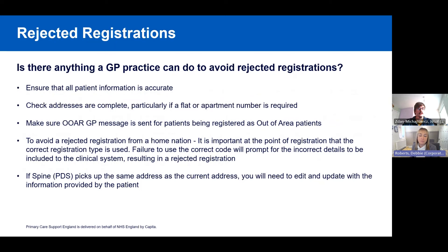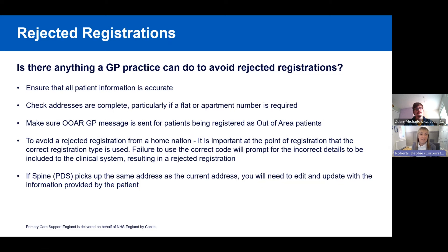To avoid a rejected registration, the most important thing is ensuring that all patient information is accurate and correct. Check addresses are complete, particularly flat numbers or apartment numbers. Make sure out-of-area registrations are sent with the correct free text. For home nation registrations, ensure the correct registration type is used at the point of registration. Also, if the Spine picks up the same address as the current address, you'll need to edit and update with the information provided by the patient.